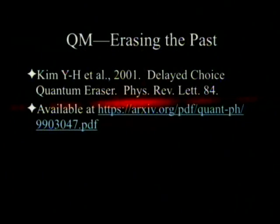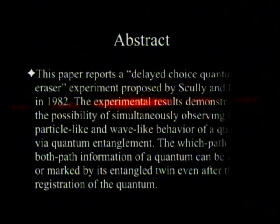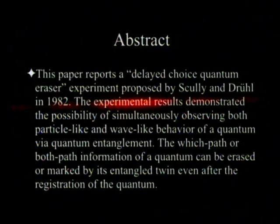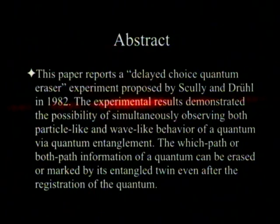If you just send them through and don't say anything, you get a nice interference pattern. But if you start checking to see which way one went, the other one's interference pattern will disappear. However, you can create a new interference pattern by erasing that information — and this is available on the internet. The paper reports a delayed quantum eraser experiment proposed by Scully and Drill in 1982, and we're going to do our own little delayed-choice quantum eraser.